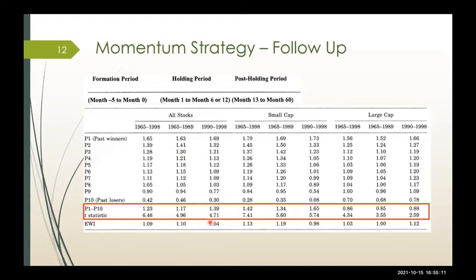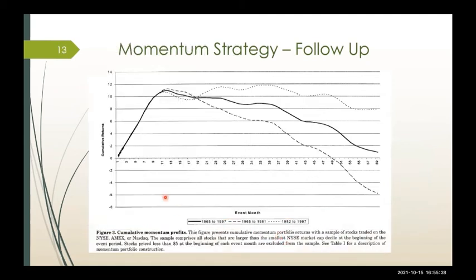You make 1.39% per month overall, 1.65% per month if you focus on small cap, and 0.88% per month for large cap. In their second paper, covering 1965 to 1997, and looking at the subperiod 1982 to 1997 — including the period after the paper was published — the momentum strategy actually becomes even stronger because it doesn't reverse as fast as in the initial period. That's the price momentum strategy.